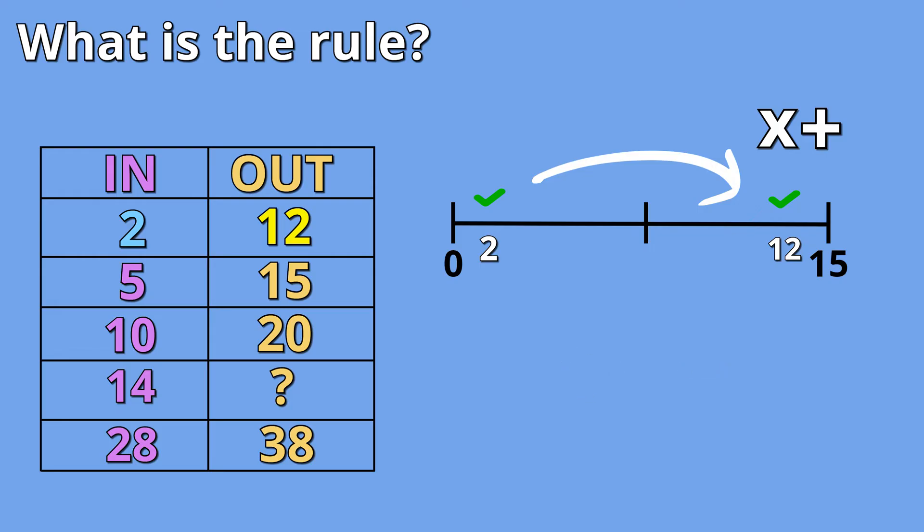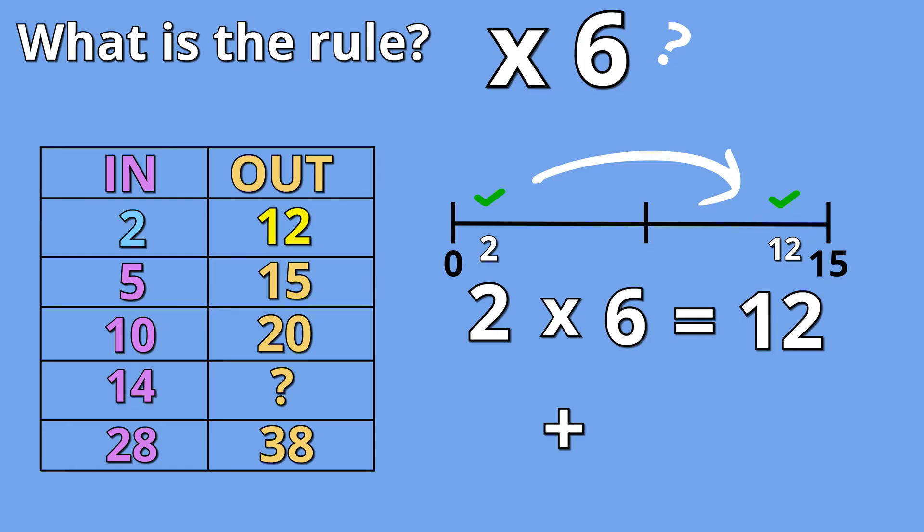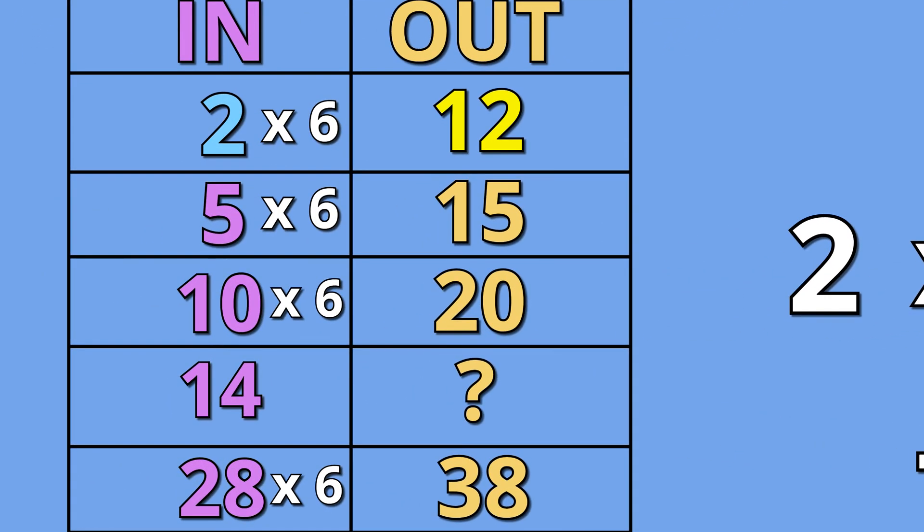So now let's try to find our rule. Two times one number is equal to 12. We know that two times six is 12. So could times six be our rule? Let's test and apply our rule to all numbers. Is five times six equal to 15? Five times six is equal to 30, not 15. So we know that this can't be a rule.